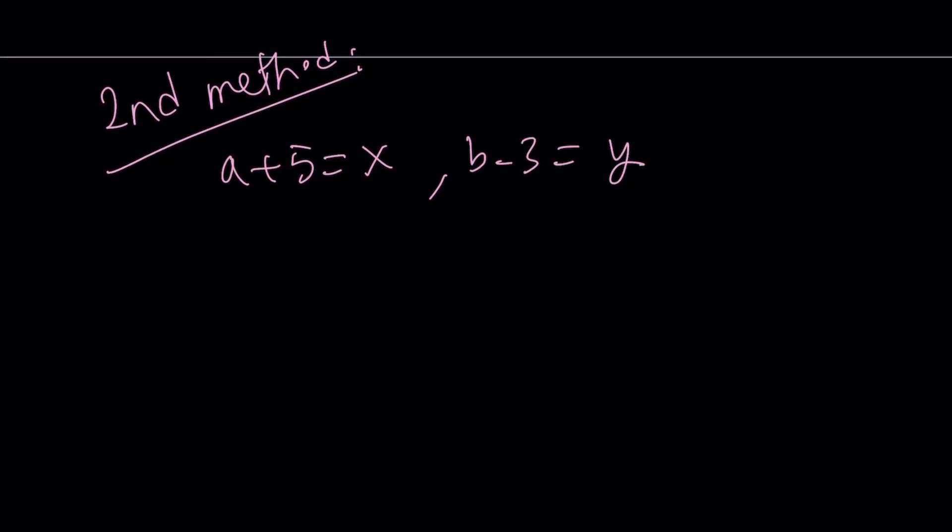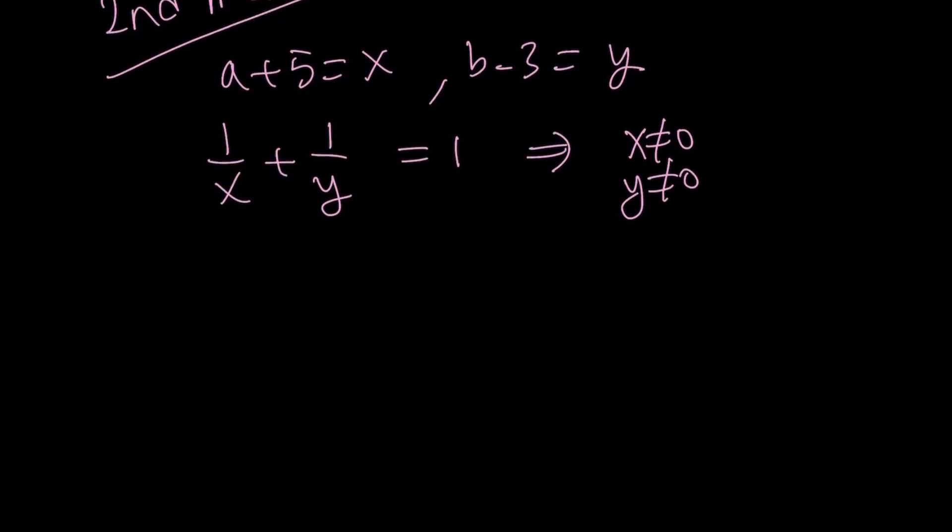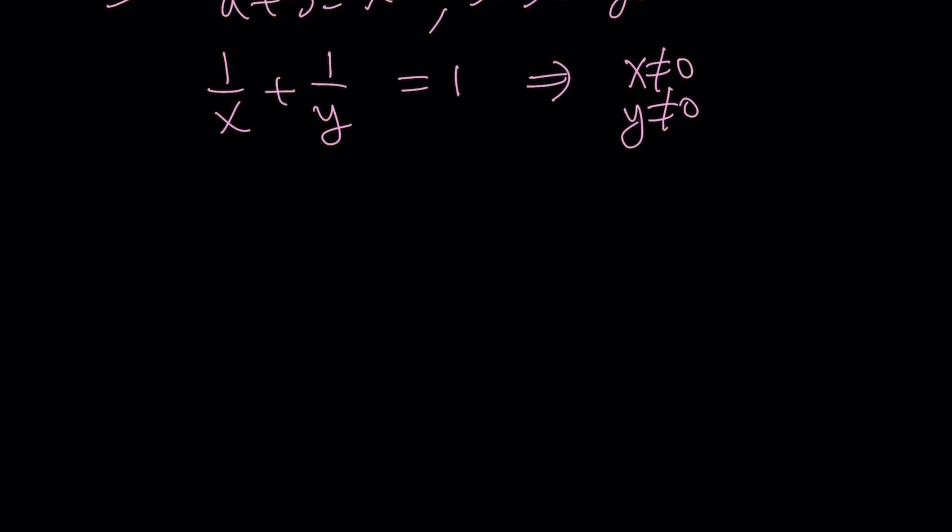So this definitely simplifies our equation. But notice that since now our new denominators are x and y, we get something like 1 over x plus 1 over y equals 1. Obviously, we do not want x and y to be 0 because that would make our expression undefined. That's a no-no. So x cannot be 0, y cannot be 0.